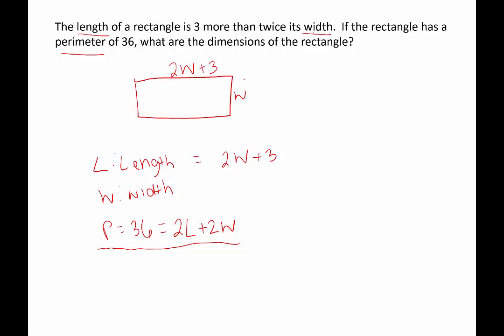So what I'll do is take these dimensions and plug them into the perimeter formula that we have at the bottom. We'll use 36 instead of P just to get rid of a variable. And then instead of L, we're going to use 2W plus 3, and then plus 2W.